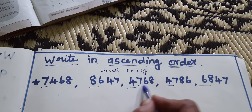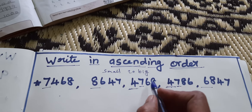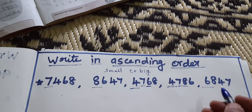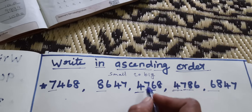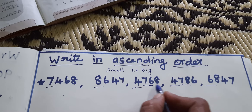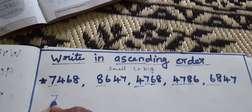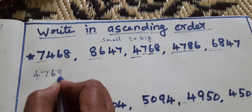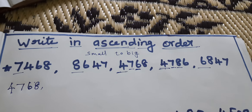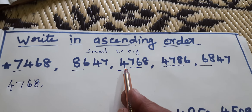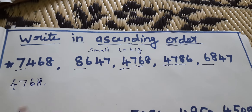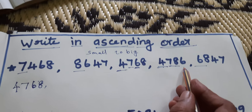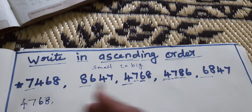Then the hundreds place: 700 and 700 — both are the same. Then the tens place: 60 or 80? Which one is the small number? 60 — the first one. So 4768 is the smallest number. Then the next one is 4786 — second.